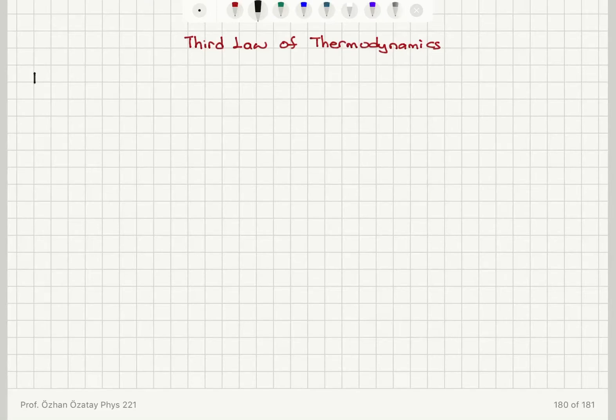So these are things that we encounter very frequently in experimental physics. Boiling point of helium, liquid helium is 4.2 Kelvin. Boiling point of hydrogen, liquid hydrogen boils at 20.3 Kelvin.